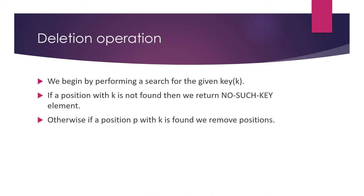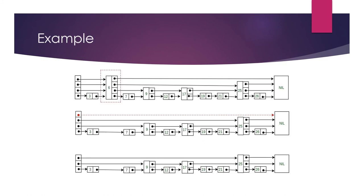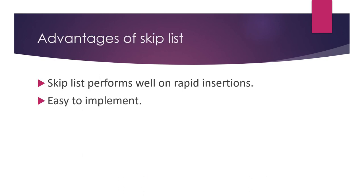For the deletion operation, first search for the given key using the three conditions. If a position with key k is not found, return no such key. Otherwise, if a position p with key k is found, remove and delete the element. Example: this skip list has elements 3, 6, 7, 9, 12, 17, 19, 21, 25, and 26. To remove 6, search for x equal to 6. With y equal to 3, x is greater than y, so scan forward. Moving to the next node, x equals y, so search is found and element 6 is deleted successfully.